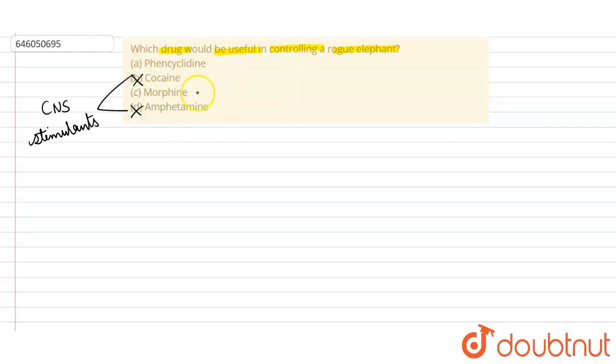Morphine also does not act as this. Basically, it acts as an analgesic or a painkiller, so we don't want a painkiller to be used.